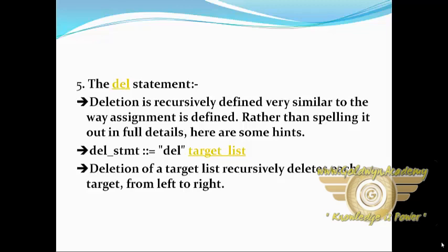del_stmt := "del" target_list. Deletion of a name removes the binding of that name from the local or global namespace, depending on whether the name occurs in a global statement in the same code block. If the name is unbound, a NameError exception will be raised. Deletion of a target list recursively deletes each target from left to right.